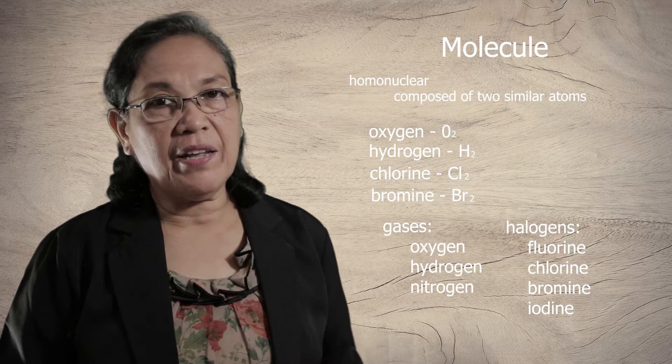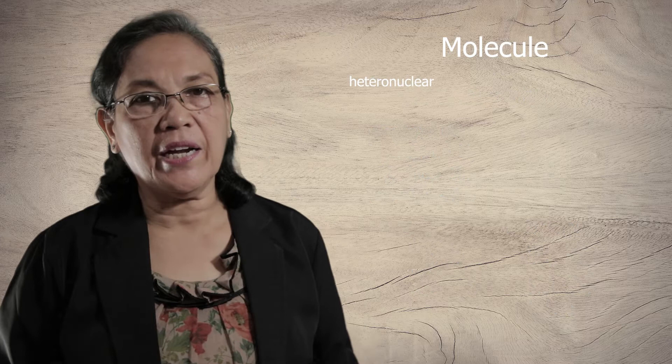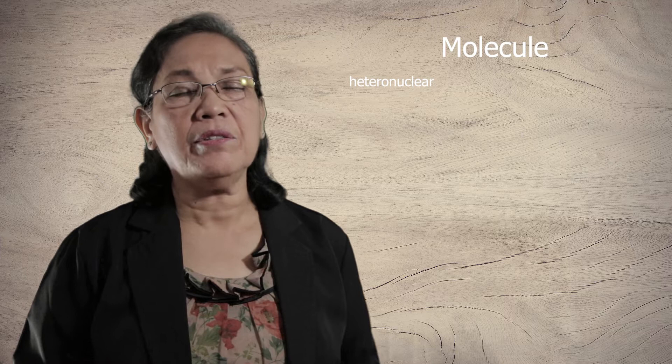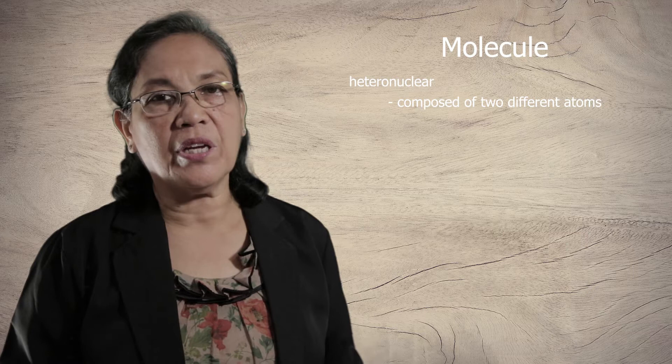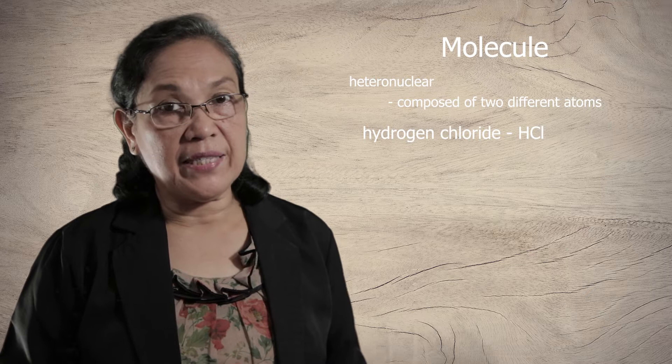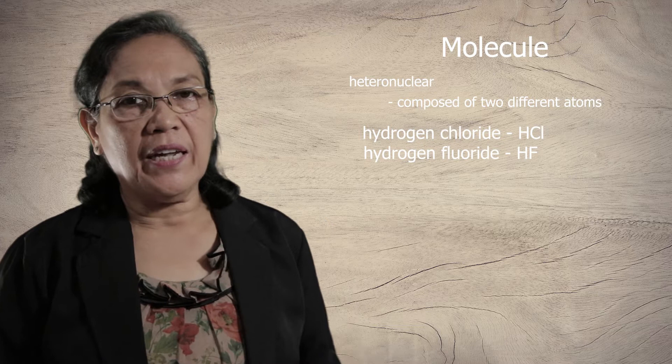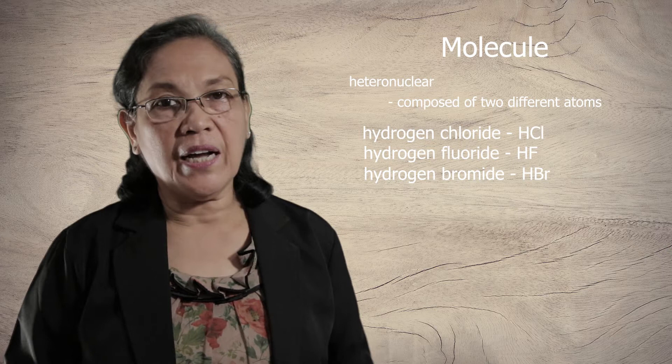The other type is the heteronuclear diatomic molecule. These are composed of two different kinds of atoms. For example, hydrogen chloride or HCl, hydrogen fluoride or HF, and hydrogen bromide. So they are composed of different atoms.